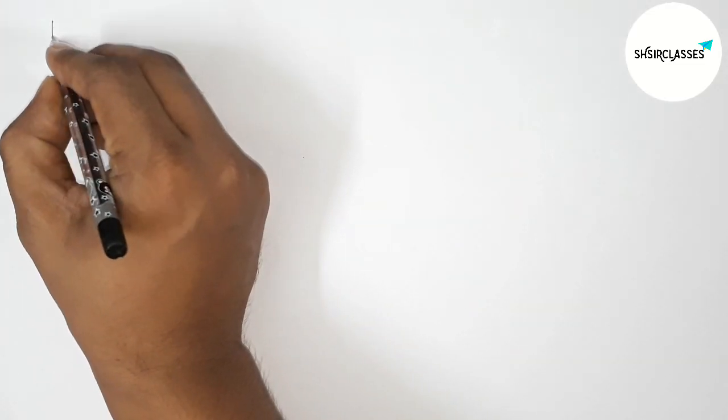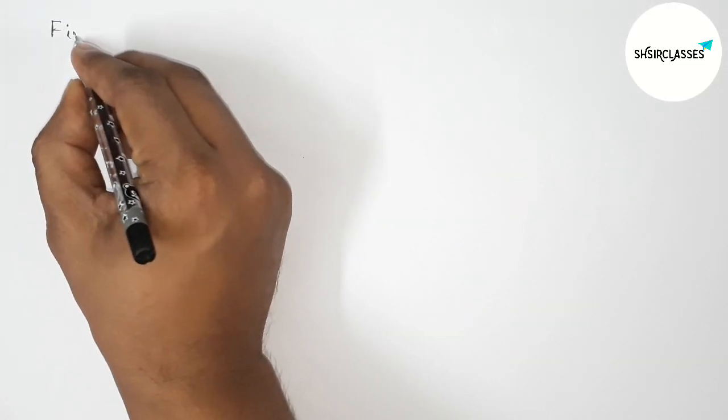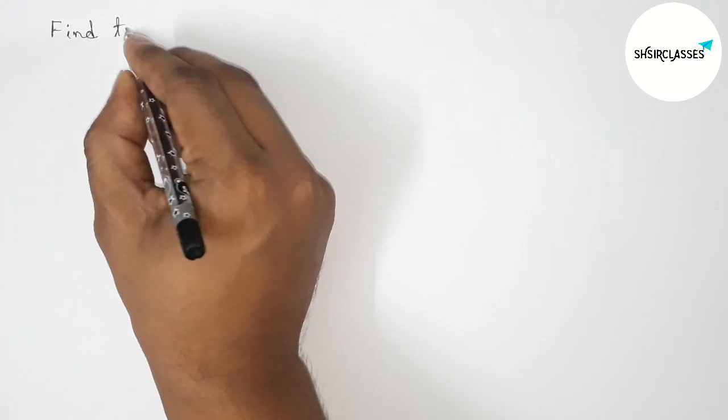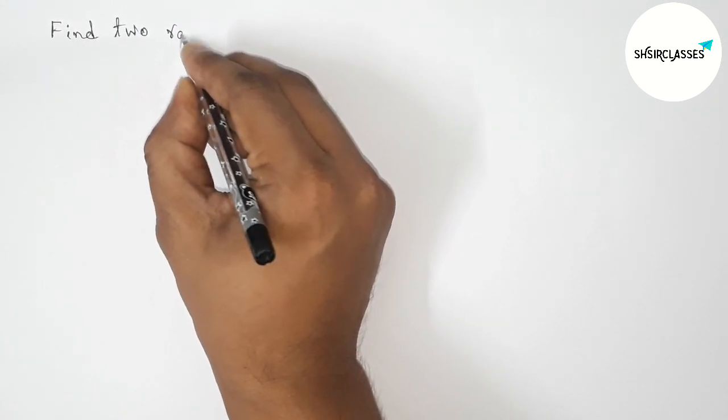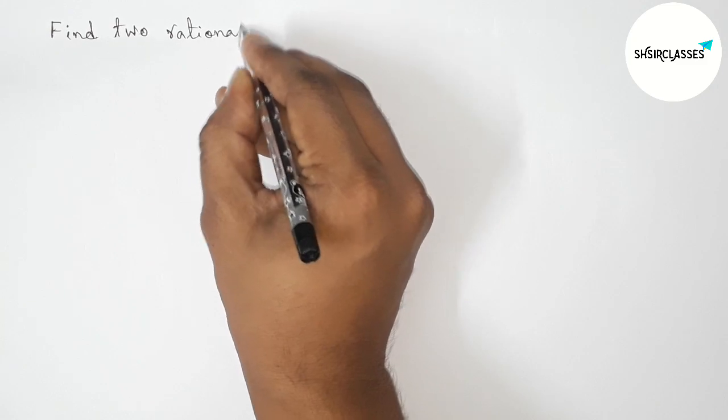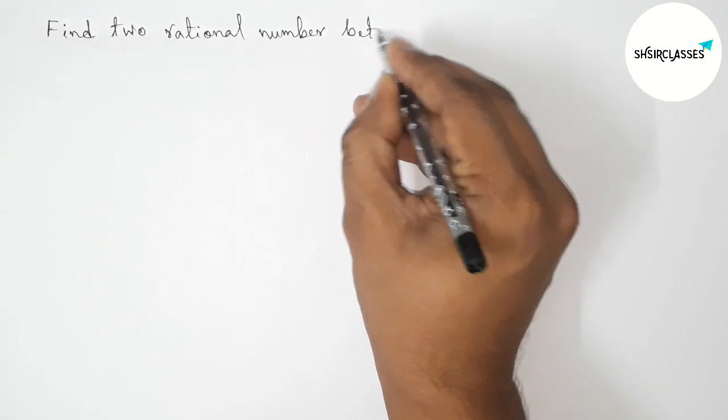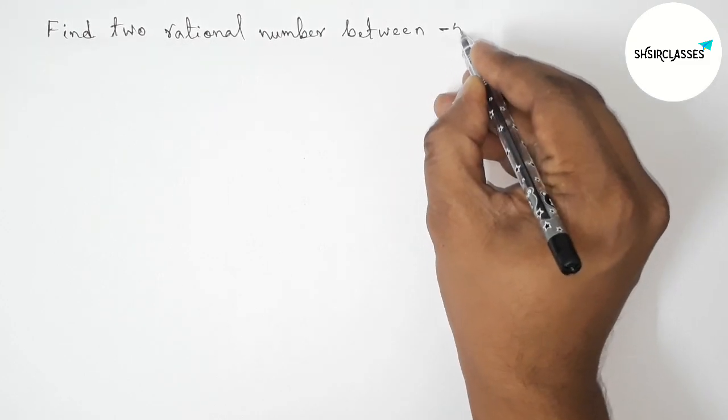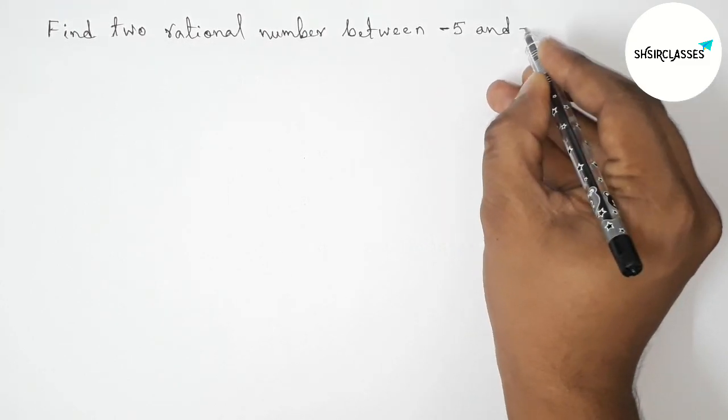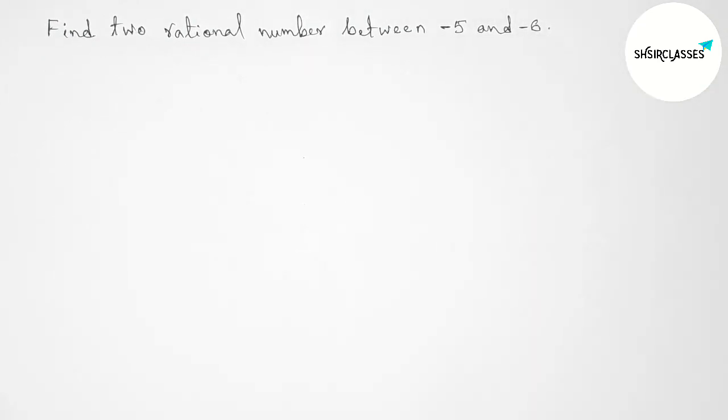Hi everyone, welcome to SIBClasses. Today in this video, we have to find two rational numbers between -5 and -6 in an easy way. Please watch the video till the end. Let's start.